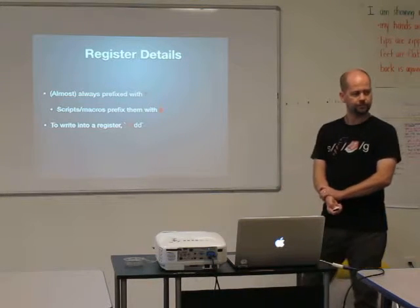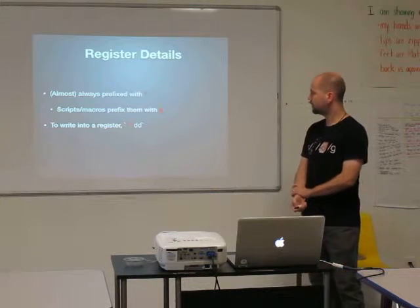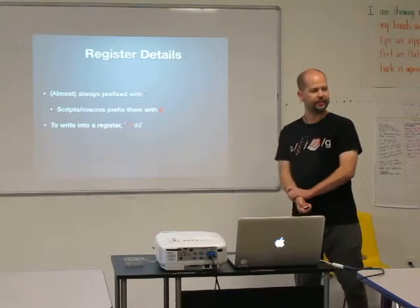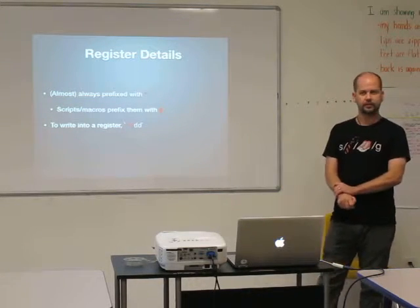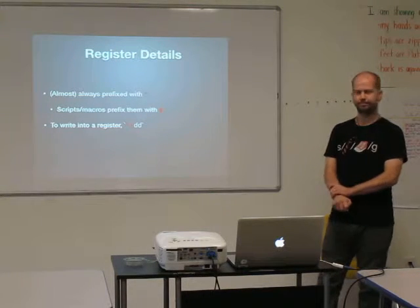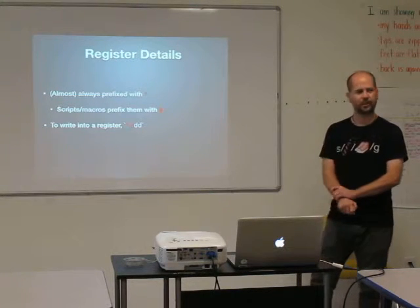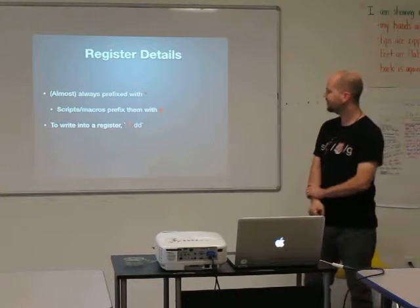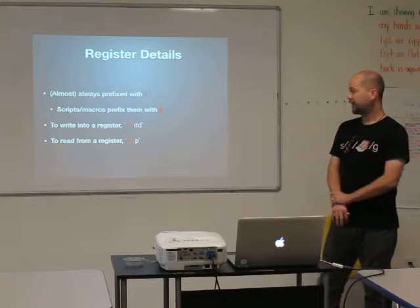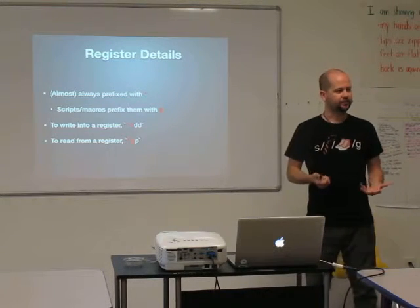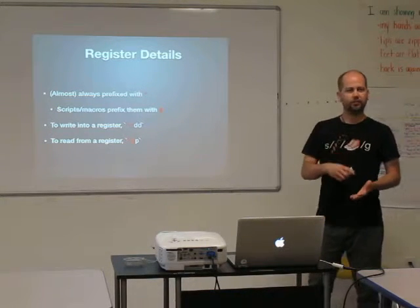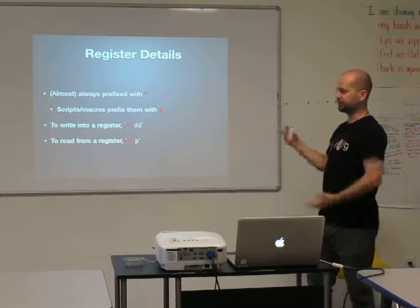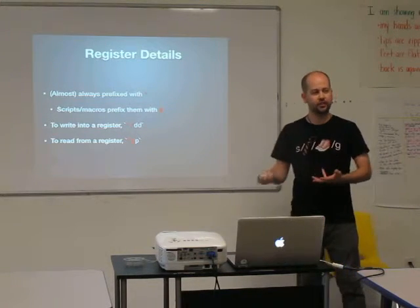And how would we use that? In normal mode. You can get to registers in insert mode, but it's more complicated. Because in normal mode, you just push a double quote character. And to read from a register, you basically do the same thing — you prefix with a double quote, you name the register that you want to read from, and then you paste. So in this particular case, we'd be reading out of the G register.